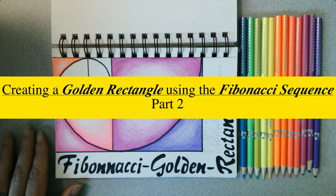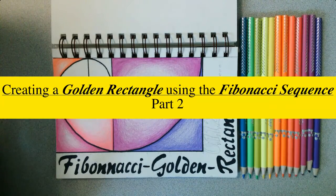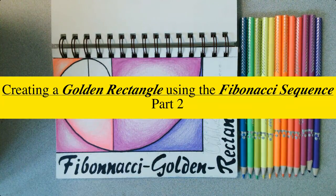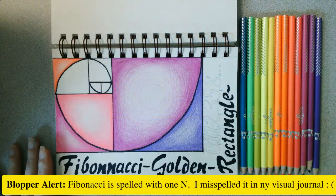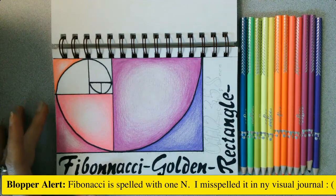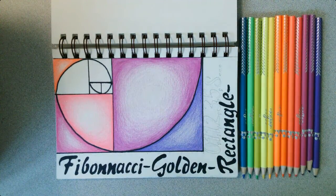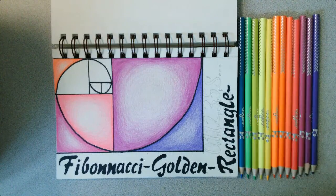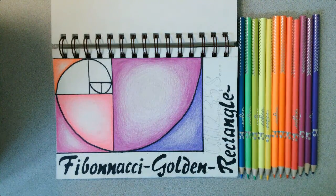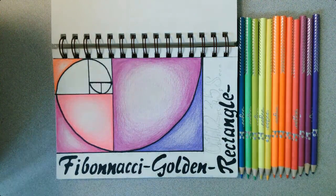We're back and ready to finish our golden rectangle. I've already started adding color so you have an example to see. My expectation is that you add color and practice the technique I'll review, but you don't need to make an exact copy. If you want to copy the colors and order I use, that's fine, but you can also come up with your own color placement. These are the colored pencils we'll be using in class — I've organized mine as you can see on my desk.